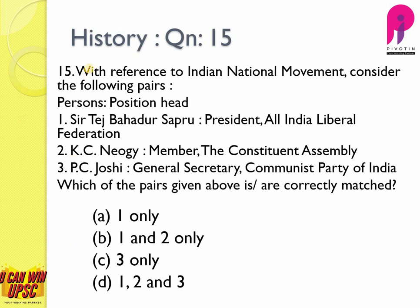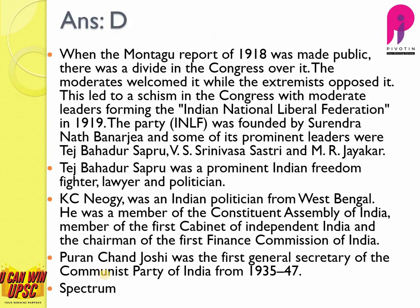Question number fifteen: with reference to the Indian National Movement, consider the following pairs. Sir Tej Bahadur Sapru — President of the All India Liberal Federation — correct. K.C. Neogi — member of the Constituent Assembly — correct; Neogi was also chairman of the first Finance Commission. P.C. Joshi — General Secretary of the Communist Party of India — correct. The answer is D — one, two, and three. After the Montagu-Chelmsford report in 1918, the moderates welcomed it, formed the Indian National Liberal Federation in 1919 under Surendranath Banerjee and leaders including Tej Bahadur Sapru. There is one more part to today's video — please do watch it. Have a nice day!